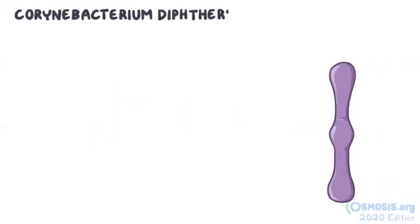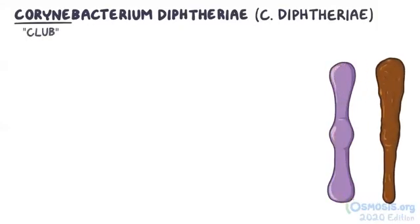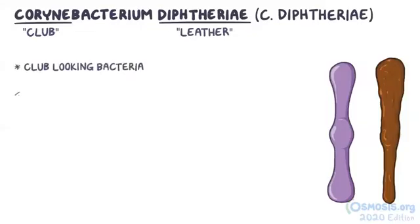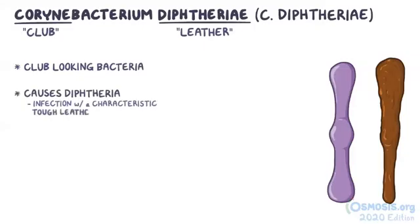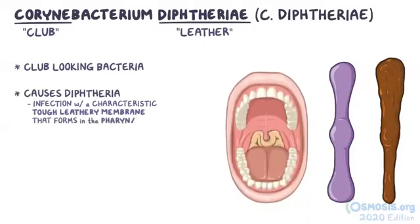Corynebacterium diphtheriae, or just C. diphtheriae, takes its name from the Greek 'coryne,' meaning club, and 'diphtheriae,' which means leather. So to sum this up, C. diphtheriae is a club-looking bacteria that causes diphtheria, an infection with a characteristic tough, leathery membrane that forms in the pharynx.